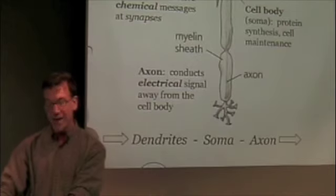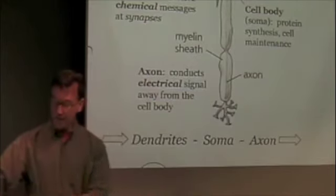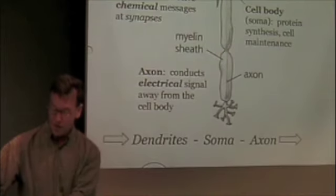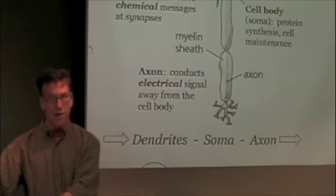At the end of the axon, we refer to the axon terminal. This is where this translation process from the electrical message that's going to travel along this axon into the release of a chemical at the synapse will occur.